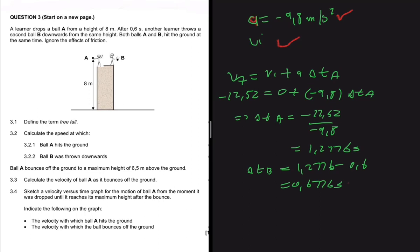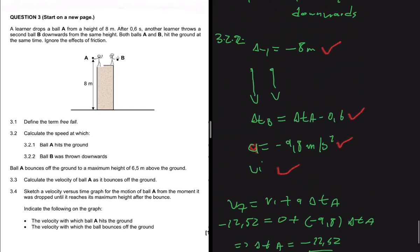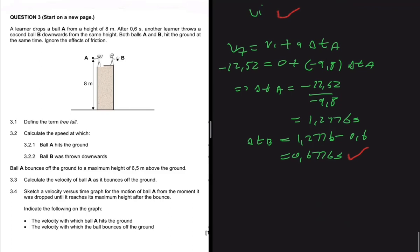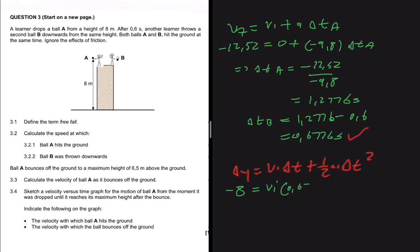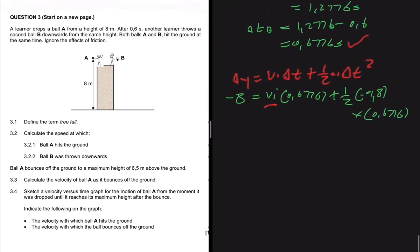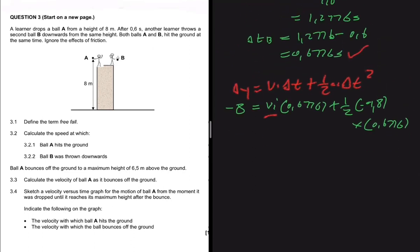Therefore, Δt for ball B equals 1.2776 minus 0.6, which equals 0.6776 seconds. Now using ball B's information, we apply Δy = vi·Δt + ½a·Δt². We know Δy is minus 8, Δt is 0.6776, and acceleration is minus 9.8. We are solving for vi.